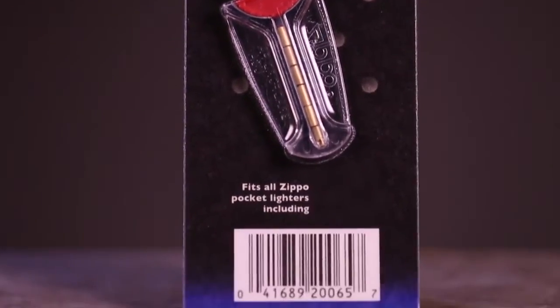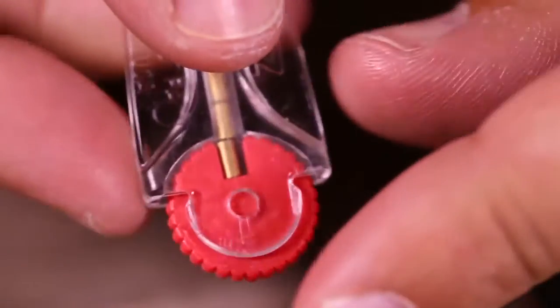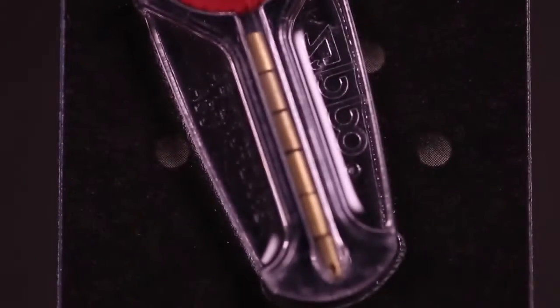Flints are something that need to be replaced approximately every few weeks for an average user. To replace the flint, we need to remove it from the flint tube.